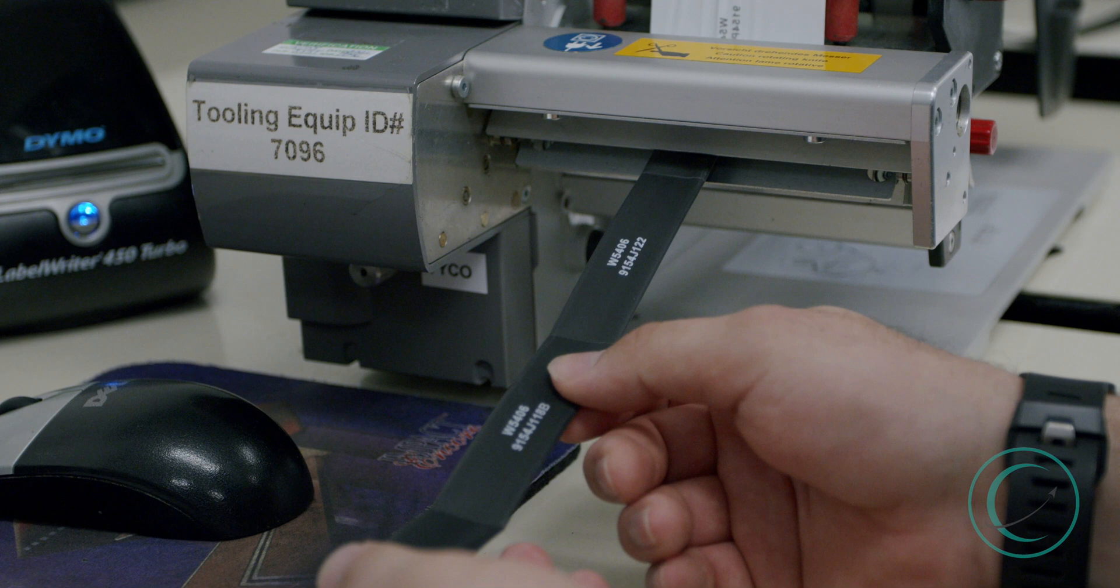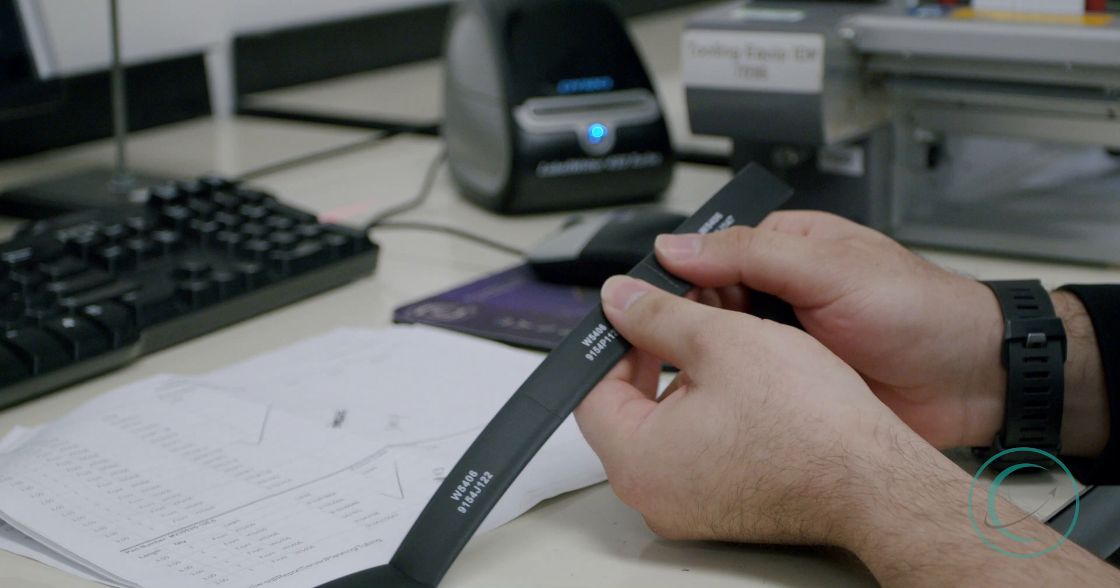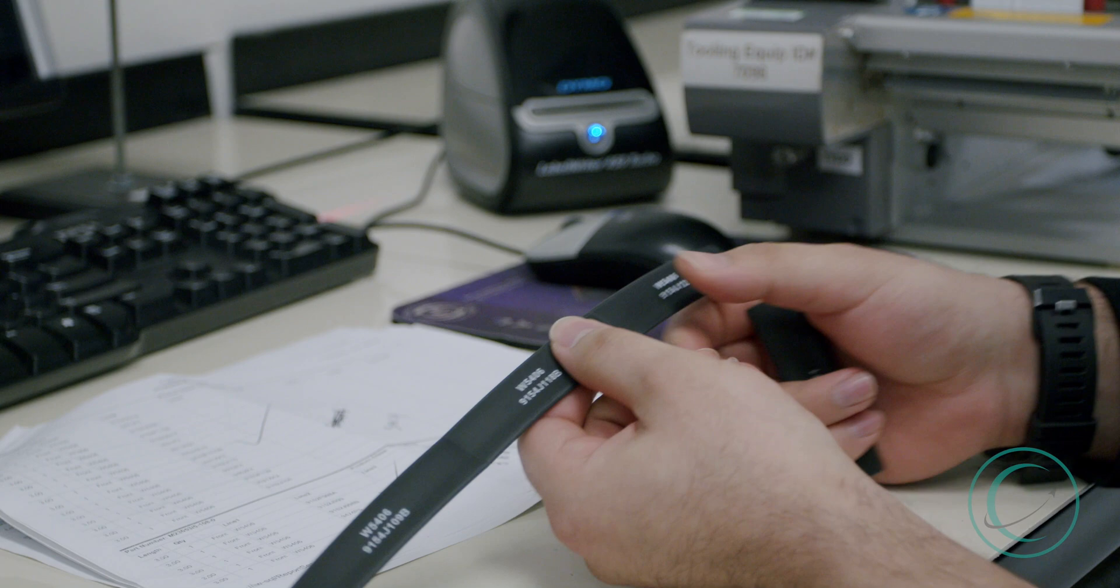The operator then separates and verifies the markings and will kit the parts with the others to identify specific locations on the UH-60 Blackhawk helicopter's avionics systems.